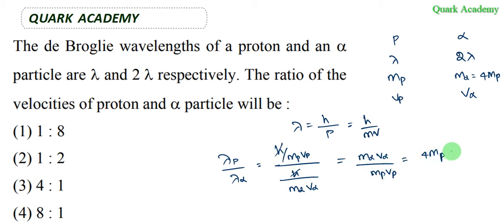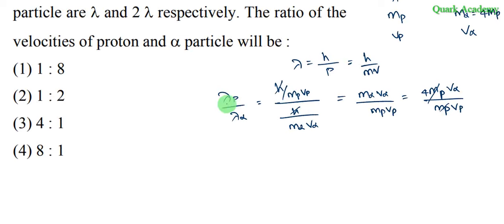This m_p gets cancelled. We will substitute the left-hand side also. The de Broglie wavelength of proton is λ, for alpha particle it is 2λ, so λ/2λ = 4v_α/v_p. But the question is asking for the velocity of proton divided by alpha particle.